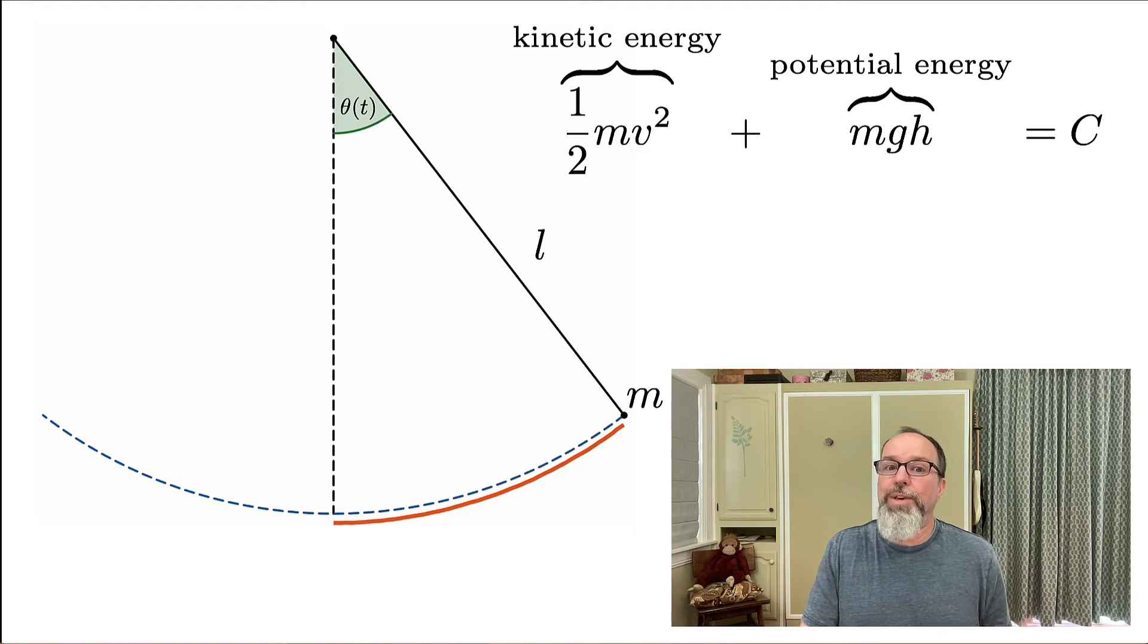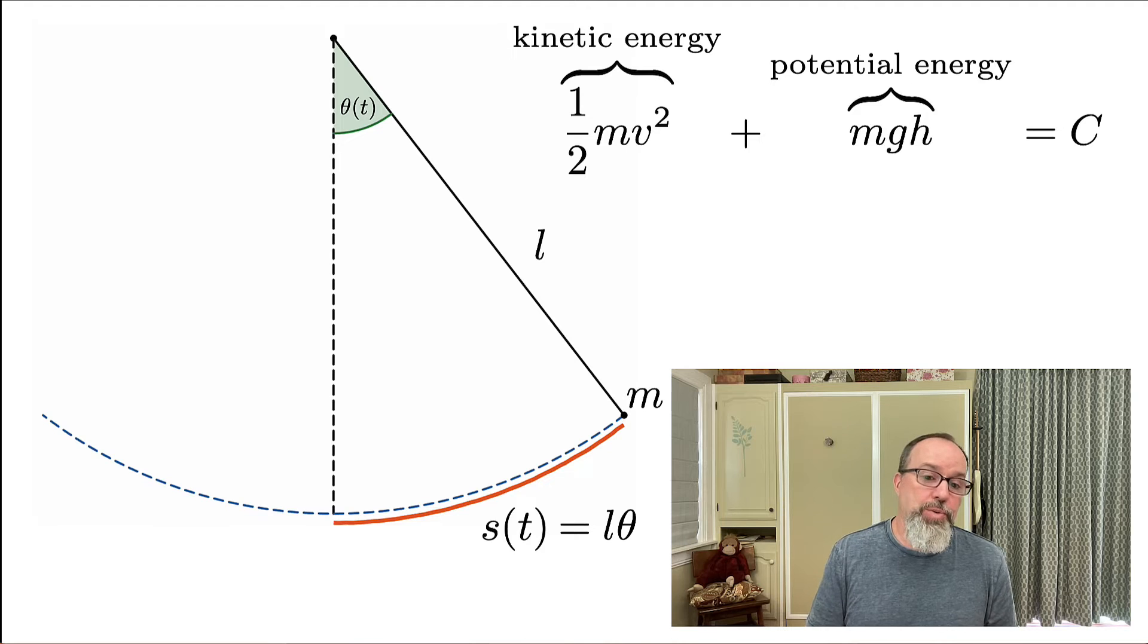I'm going to borrow something from trig class. This part of the pendulum swing I put in orange is an arc length. We can think of this as part of a giant circle. The arc length formula is S = Lθ, where L is the radius and θ is the central angle. I wrote S as a function of t because as the pendulum moves, the arc length changes.